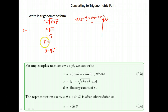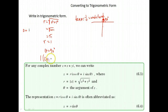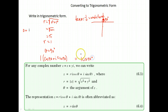So we have r equals 1 and theta equals 90 degrees. Written in trigonometric form: 1 cosine 90 plus i sine 90, noting that cosine of 90 is 0. Or we can write it as 1 cis 90 degrees, which would typically just be written as cis 90 degrees.